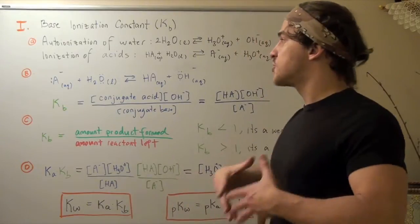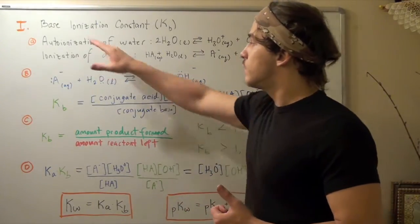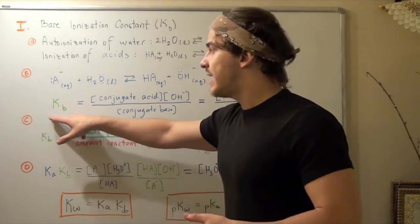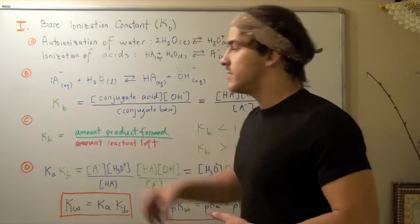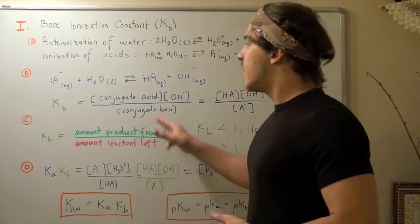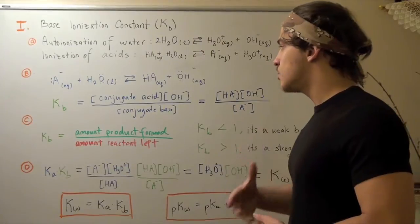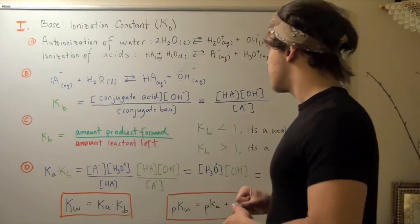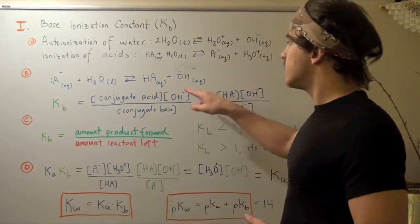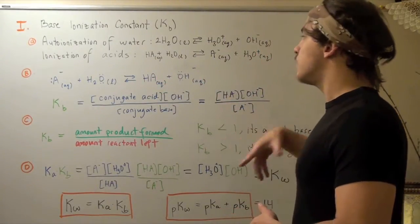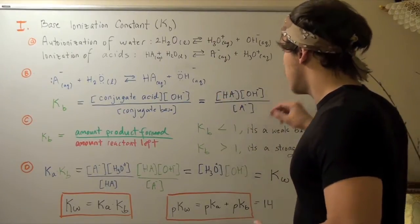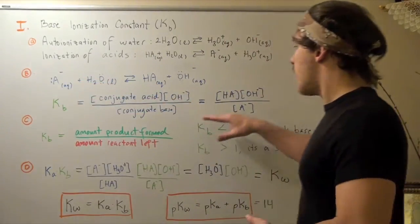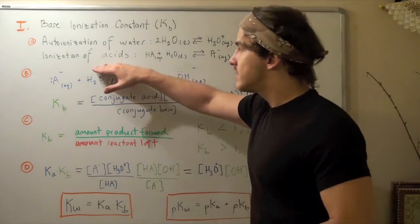The same way we wrote equilibrium expressions for acids and for water, we can also write equilibrium expressions for bases. Except now, we replace Ka and Kw with Kb, the ionization constant for our base. So Kb is equal to the concentration of the conjugate acid times the concentration of hydroxide, divided by the concentration of our conjugate base. Our reactants go on the bottom, our products go on the top — just like they would for acids and for water.